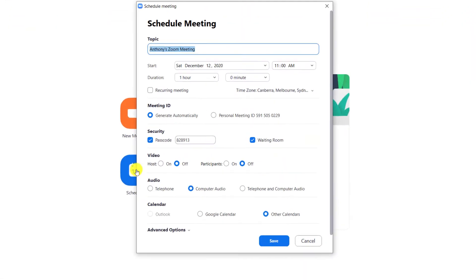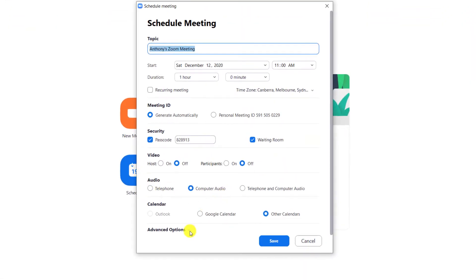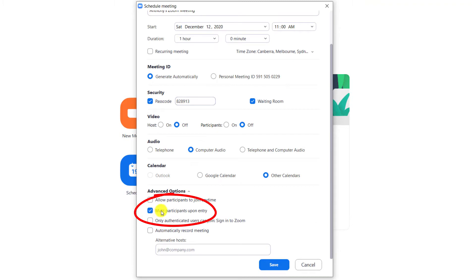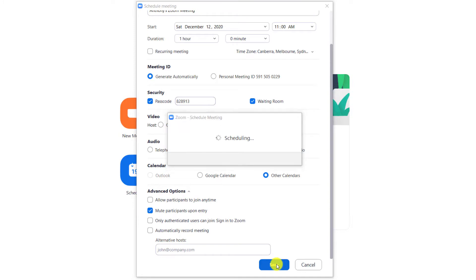To enable the setting when scheduling a meeting, you need to expand the advanced options and tick on the option to mute participants upon entry. Remember to click save to confirm your changes.